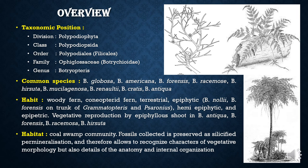Taxonomically, Botryopteris belongs to division Polypodiophyta and class Polypodiopsida — typical for all ferns — and order Polypodiales. This order earlier belonged to order Filicales, which is why that is noted in brackets. The family is Ophioglossaceae and the subfamily is Botryopteridaceae.